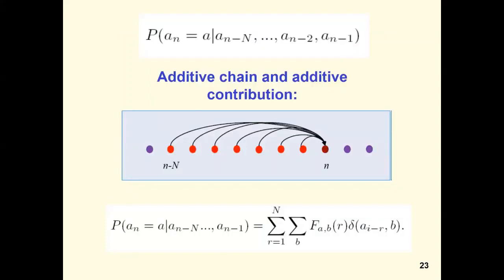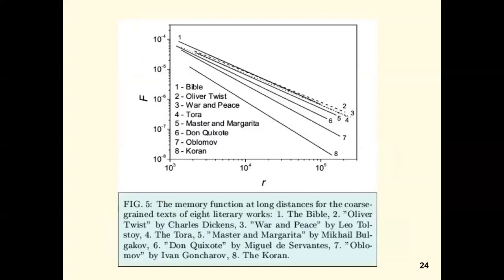Now we return to the additive Markov chain. Here is a picture. Recall once more about pair interaction of symbols, and the formula is one of the variants to write this interaction. The delta function transforms symbols into numbers. The memory function FAB takes into account the change of the strength of interactions depending on the distance R between symbols. This slide shows the result of additive Markov chain to a series of literary works. The double log scale picture indicates the power dependence of the memory function at long distances. We see the different literary works can be classified by the numerical parameter of these lines.